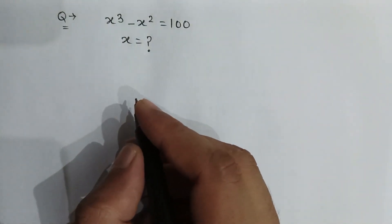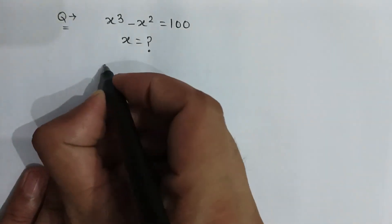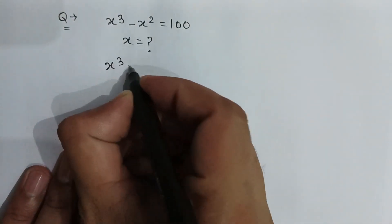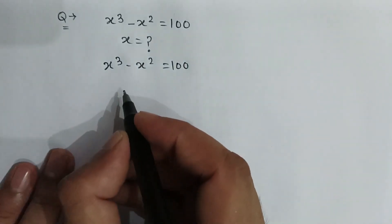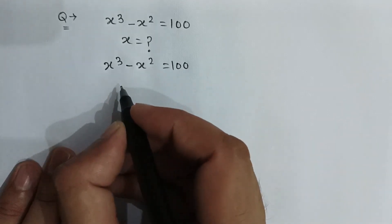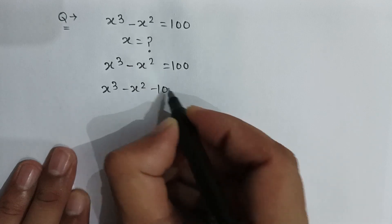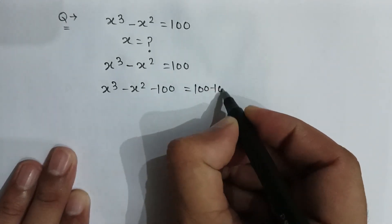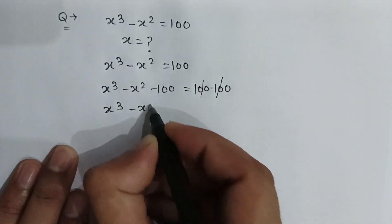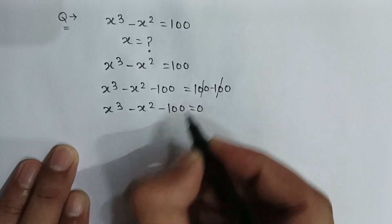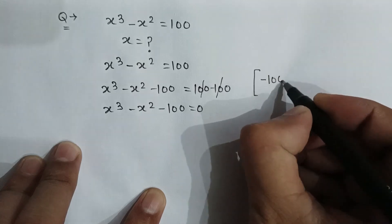Here we go. x cube minus x square is equal to 100. We need to find the value of x. We can subtract 100 from both sides, so x cube minus x square minus 100 is equal to 0.